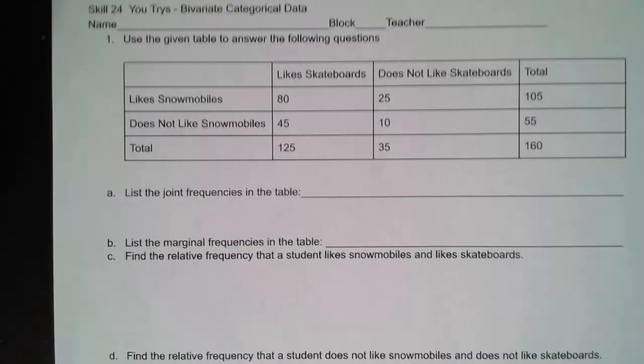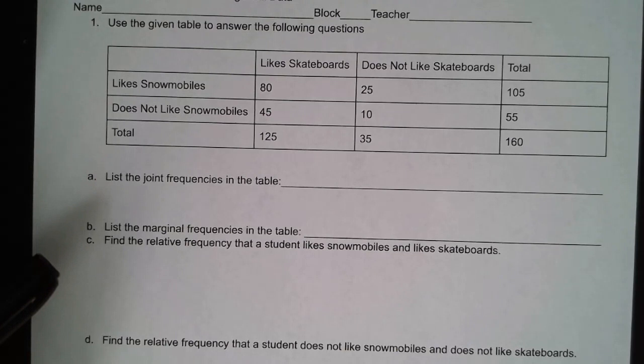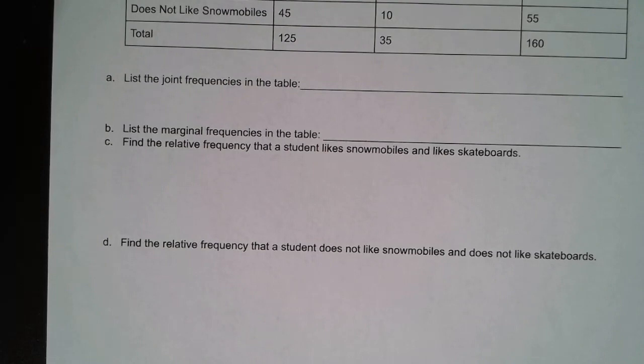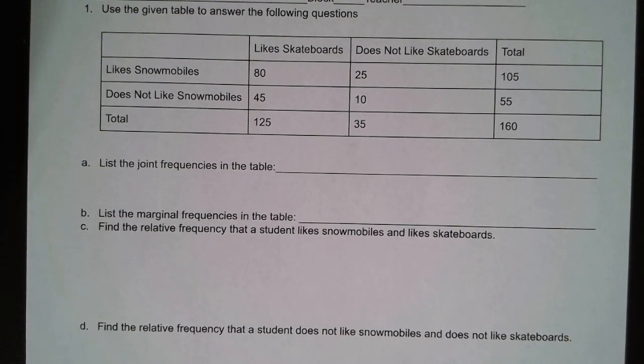Now I'd like to turn to the practice problem. Here we have a table already filled out. First, list the joint frequencies; then list the marginal frequencies; then find the relative frequency that a student likes snowmobiles and likes skateboards; and finally find the relative frequency that a student does not like snowmobiles and does not like skateboards. Go ahead and pause the video and try all of these parts right now.